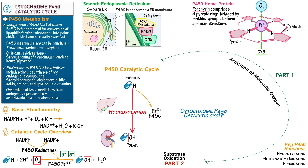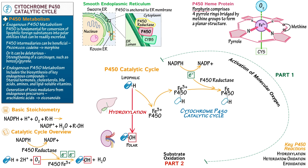The drug binds to the active site of P450. Next, via a P450 reductase reaction, NADPH is oxidized to NADP+, and an electron is transferred to the P450 enzyme, which reduces the iron to its ferrous state, Fe²⁺, the 2-plus oxidation state. As a reminder, oxidation is the loss of electrons and reduction is the gain of electrons.